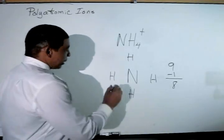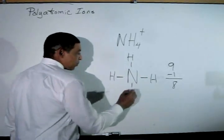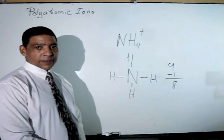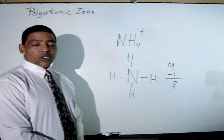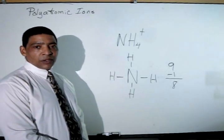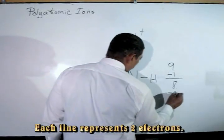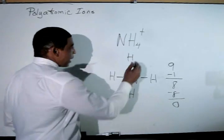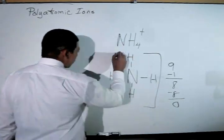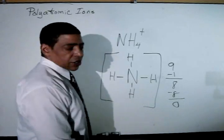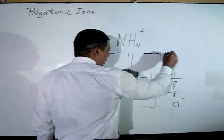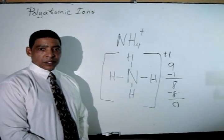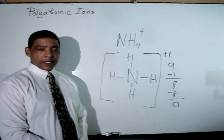Now the atoms are connected via a line which represents a covalent bond. By drawing four covalent bonds, we've now consumed eight electrons, which leaves zero. To complete our Lewis structure, we place brackets around the NH4 and a charge of plus one outside of the brackets. This represents the proper Lewis structure for the ammonium polyatomic ion.